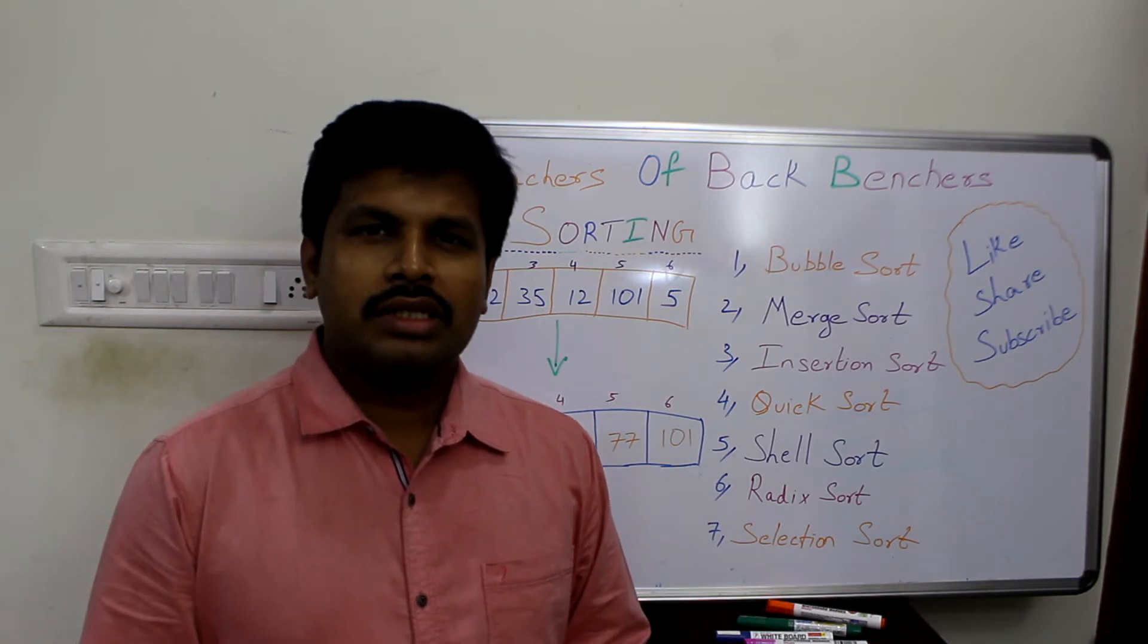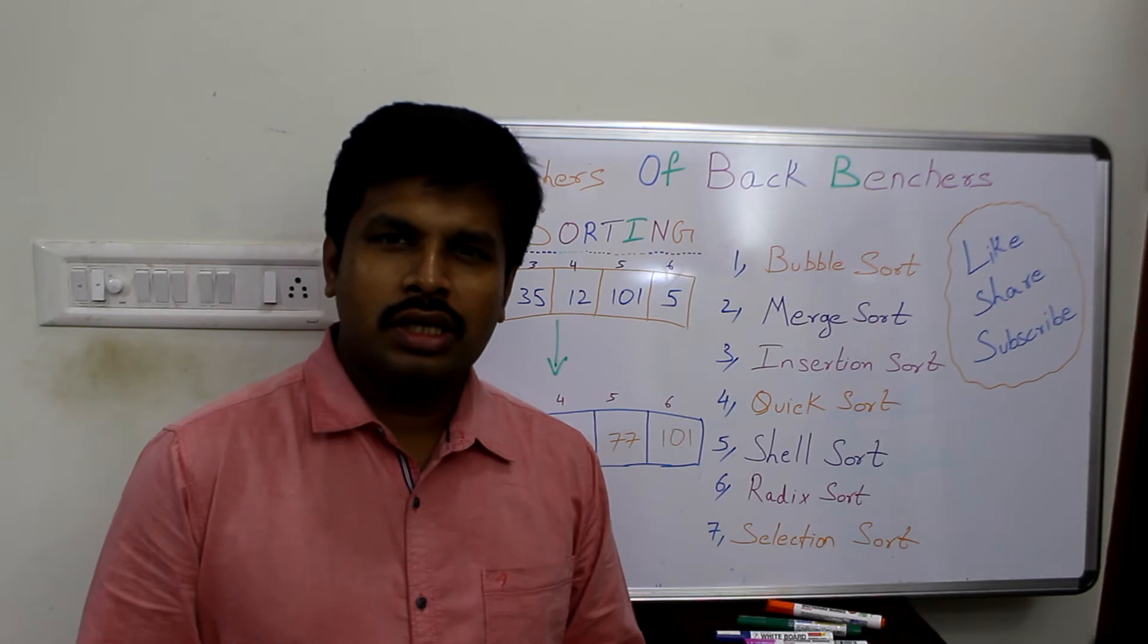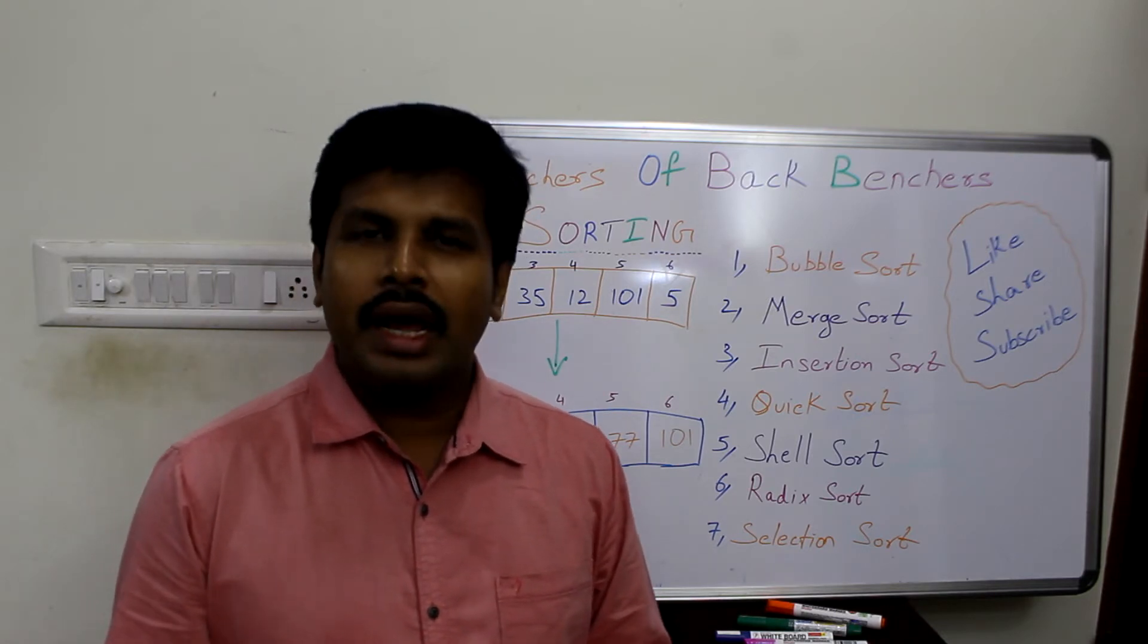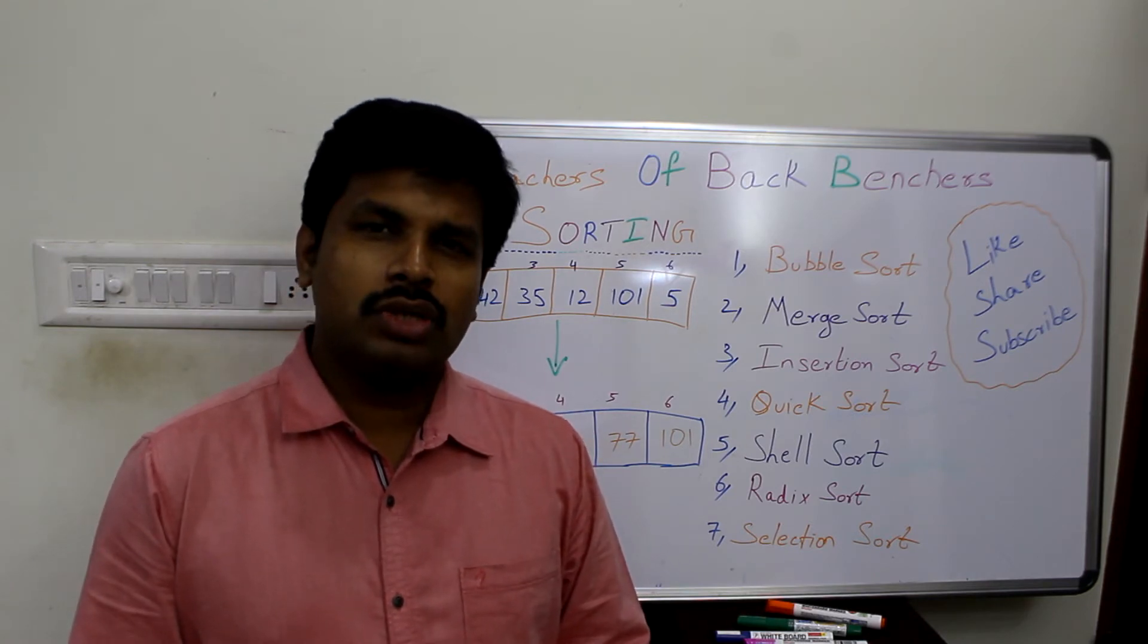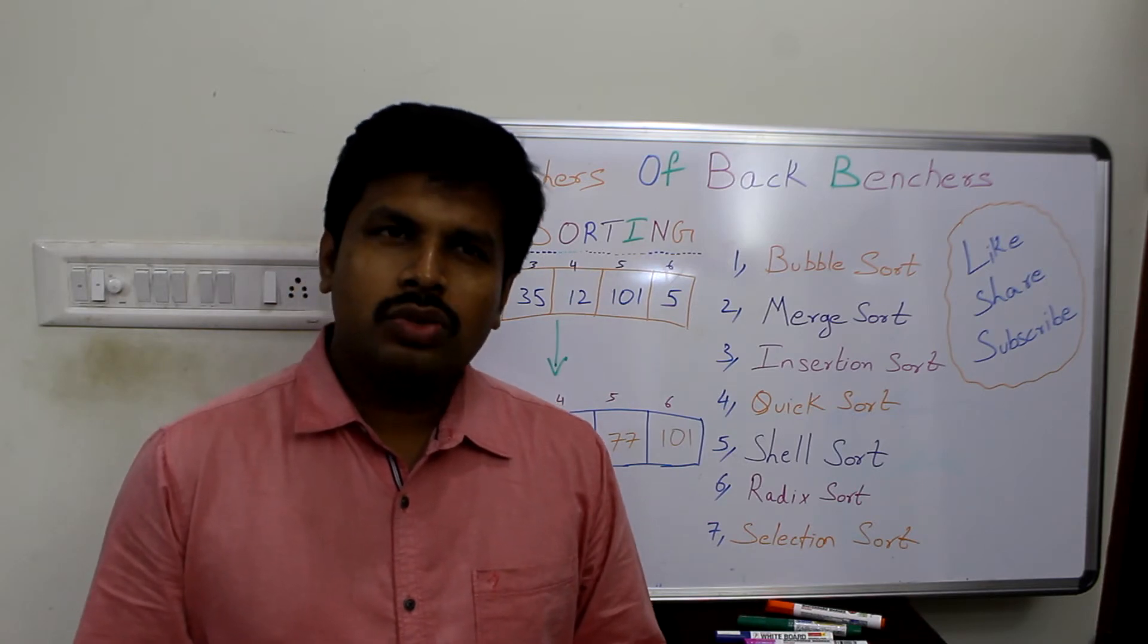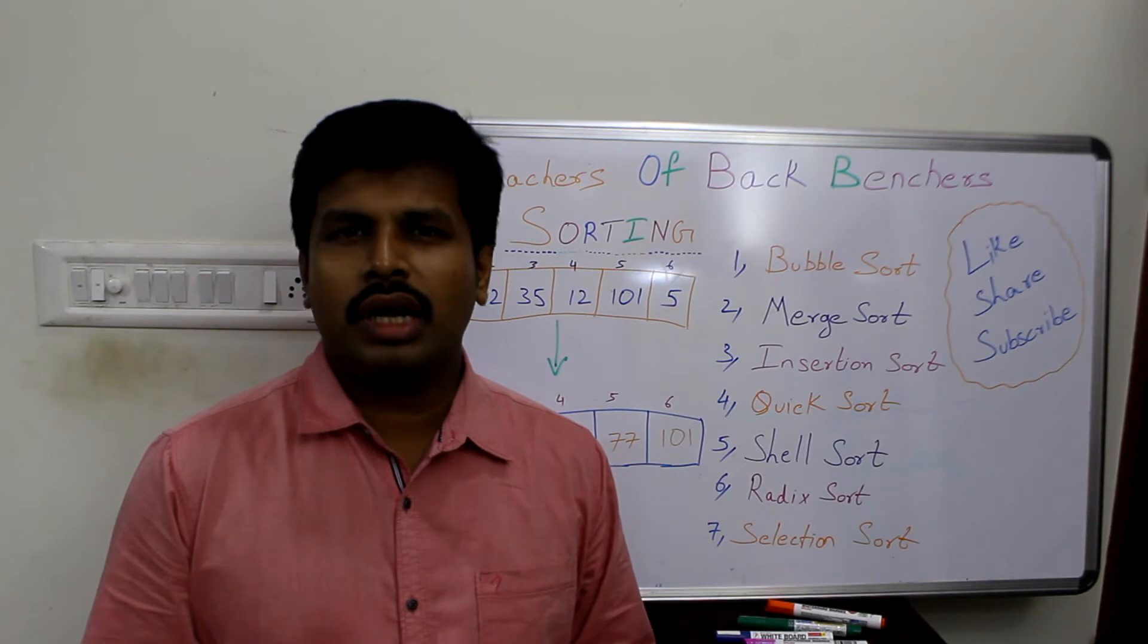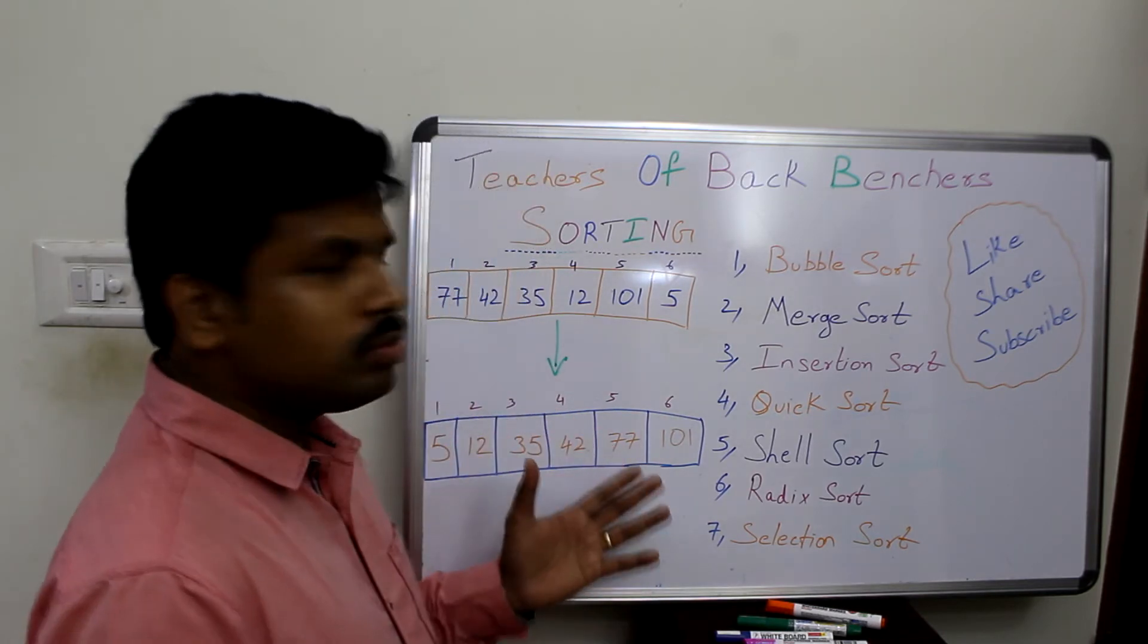The series is not sorted—a jumbled number of series is given as input and a sorted series is the output. Now what are the strategies we are going to use to sort a given series? There are two types of techniques: one is ascending order and one is descending order.